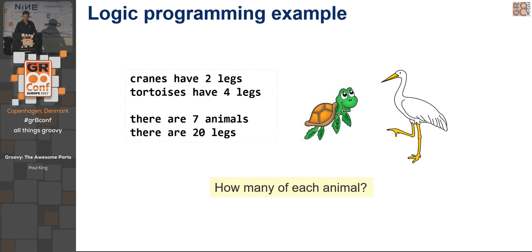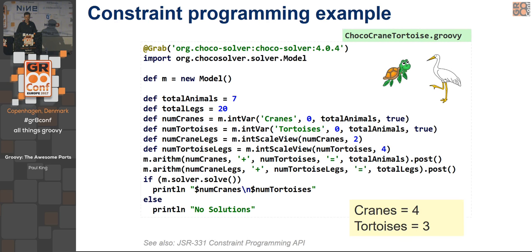I'm going to quickly show you one logic programming example and one dataflow example. The crescendo at the end of the talk will come back and look at this particular example again and make a DSL out of it. For now we'll just look at using a constraint programming library.